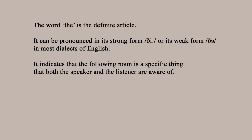The strong form of the word in standard English is 'thee,' and that's used when the next word starts with a vowel — so 'the apple,' 'the onion' — or sometimes if you're trying to emphasize things, for example 'it's not a mouse, it's THE mouse.' But in all other situations people tend to use the weak form 'the.' This is called the definite article and it's used in conjunction with a noun.